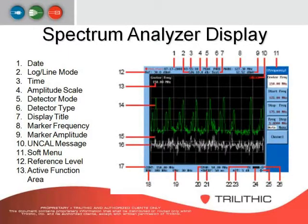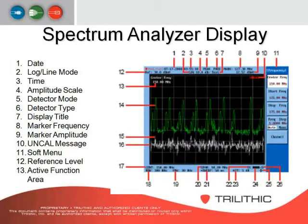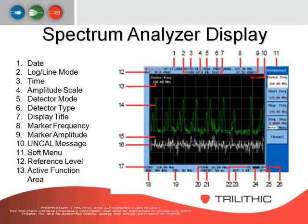Number seven, the display screen, shows the current user-in or title of the display screen. Number eight, the marker frequency, displays what frequency the selected marker is at. Number nine is your marker amplitude, showing the actual level of the marker. Number ten is the uncal measurement — when it says uncal, that means that particular measurement is uncalibrated.